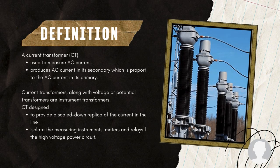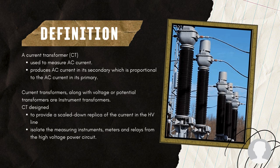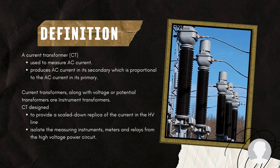A current transformer, CT, is used to measure AC current. It produces an AC current in its secondary which is proportional to the AC current in its primary. Current transformers, along with voltage or potential transformers, are instrument transformers. Current transformers are designed to provide a scaled-down replica of the current in the high-voltage line and isolate the measuring instruments, meters, and relays from the high-voltage power circuit.